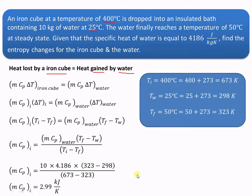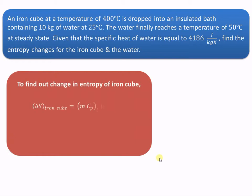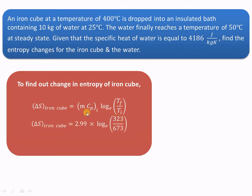Using these values, the heat capacity (MCP) of the iron cube is calculated as 2.99 kJ per Kelvin. The change in entropy for the iron cube is given by MCP × ln(Tf / Ti). Substituting Tf as 323 K and Ti as 673 K gives a value of minus 2.199 kJ per Kelvin. Since heat is rejected from the iron cube, the change in entropy is negative.